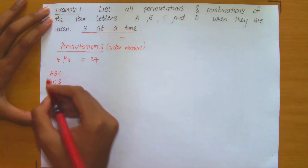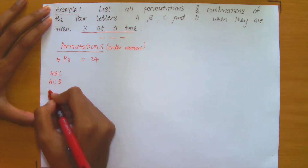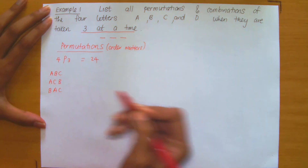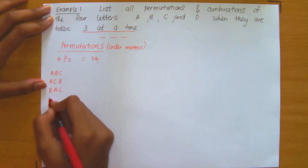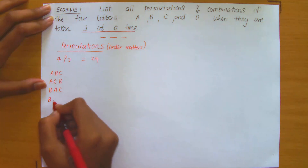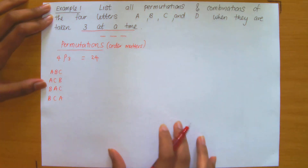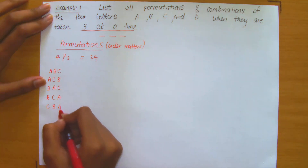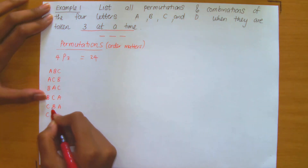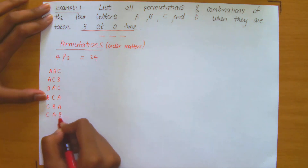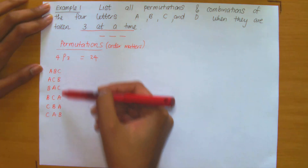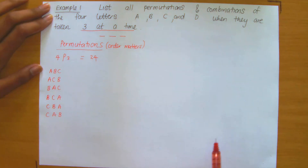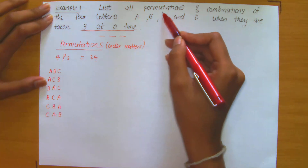Now let's change the position of A. Placing B in position 1, I write B, A, C — that's the third permutation. Keeping B in position 1, I swap A and C to get B, C, A. Next, putting C in position 1 gives C, A, B, and swapping A and B gives C, B, A. So I've obtained six permutations from the letters A, B, and C. Now let me remove C and work with A, B, and D.